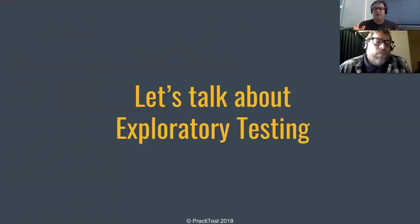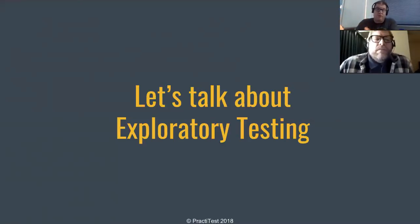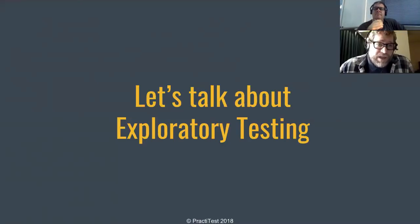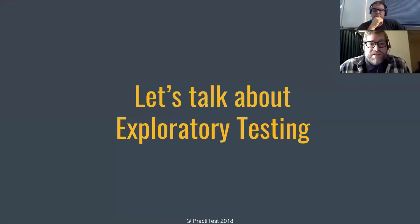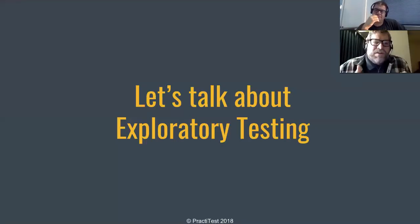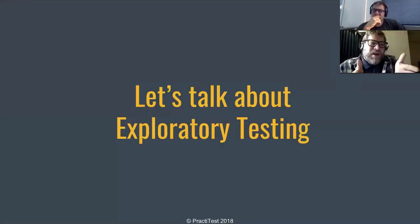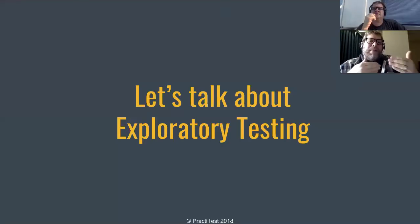A different problem comes up with agile teams where you have one testing specialist, five programmers, and the programmers need to test. There are two categories: developers who didn't write the software, and developers who did write the software — and you have a different challenge with each. Developers who didn't write the software still tend to approach the product in a technocratic way rather than a user-empathic way.